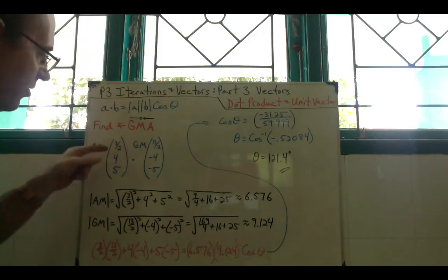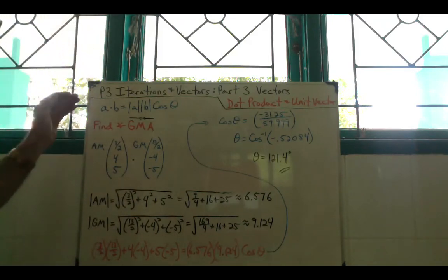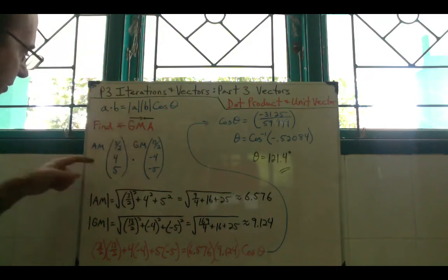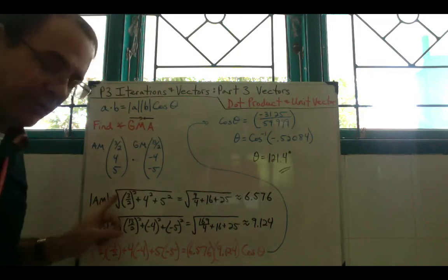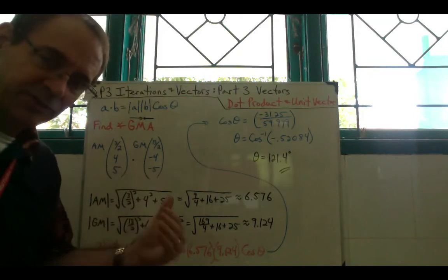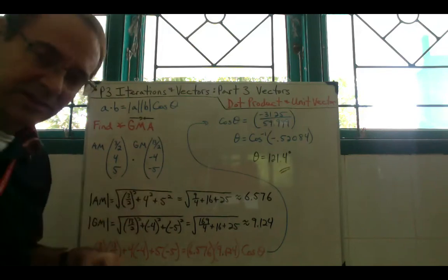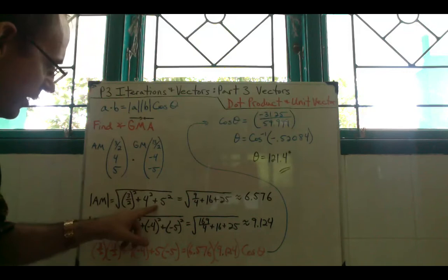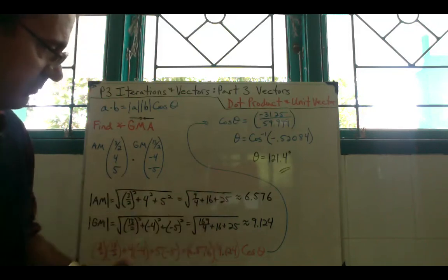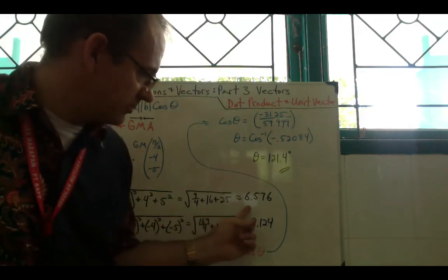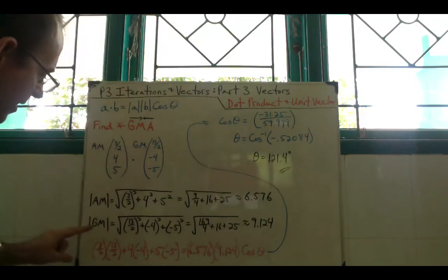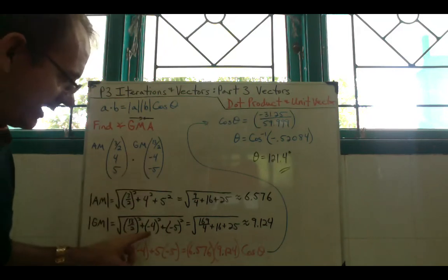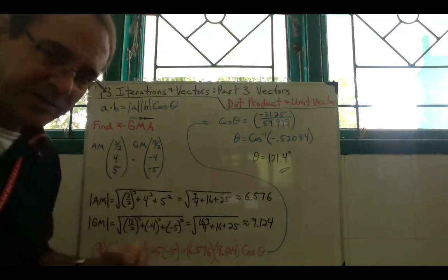Now following the formula, we also need the magnitudes. The magnitude of AM is √((3/2)² + 4² + 5²) = √(9/4 + 16 + 25) ≈ 6.576. The magnitude of GM is √((13/2)² + (-4)² + (-5)²) ≈ 9.124. Make sure those negatives are inside the parentheses when using your calculator, so they square to positive.